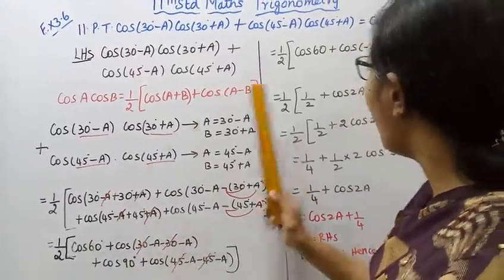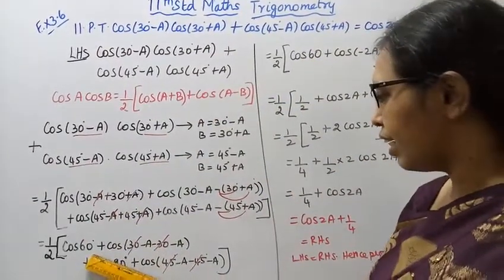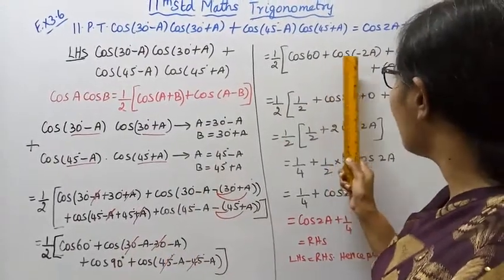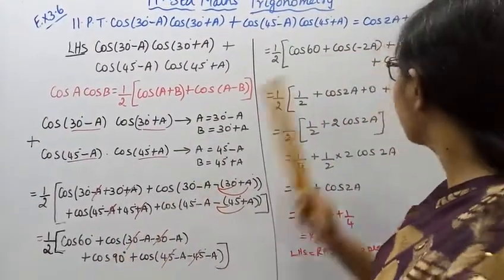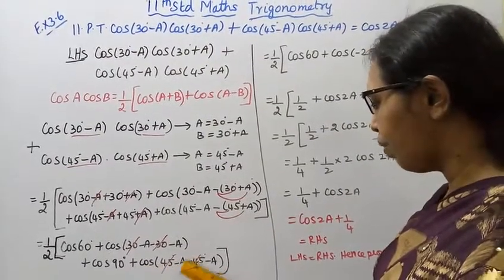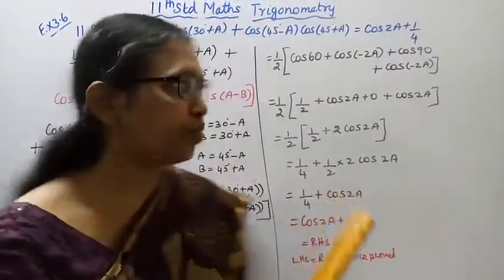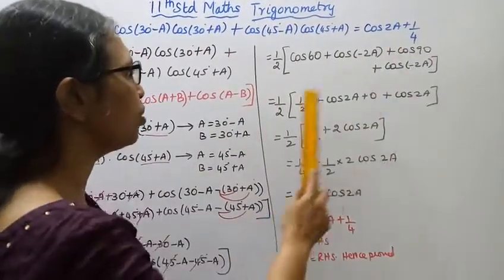Half, cos 60, this is cos minus A minus A, cos minus 2A, plus cos 90, plus cos minus A minus A, cos minus 2A. Half.